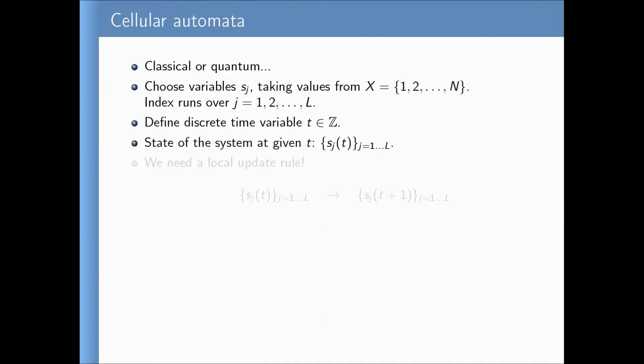The state of the system at a given time is just the collection of cell values, depending on the discrete time index. To have dynamics, we define a local update rule that tells us how to compute the state at time t+1 from the values at t. This is motivated by physical requirements: something happening locally should not depend on what is very far away. Today I will choose a specific type of local update rule.